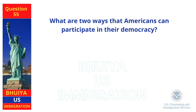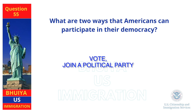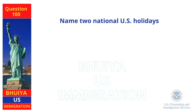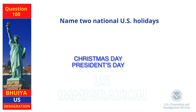What are two ways that Americans can participate in their democracy? Vote. Join a political party. Name two national U.S. holidays. Christmas Day, President's Day.